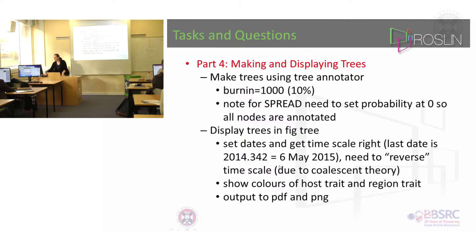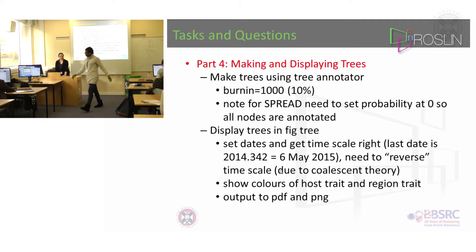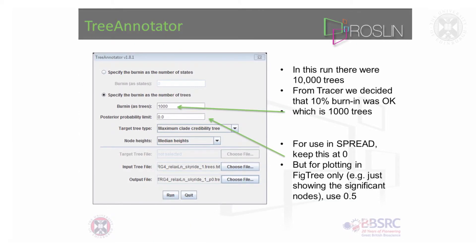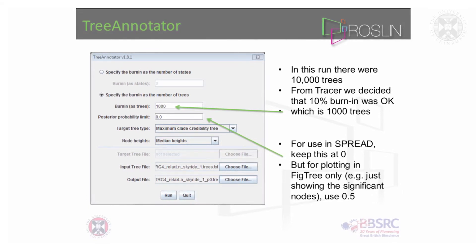In that directory of runs I have already done, there are the discrete trait runs. You will be able to find runs done with region and host, in directories called 'discrete traits' next to the plain ones. When you make the MCC trees in Tree Annotator and open them in FigTree, you will have the opportunity to color the trees by discrete trait.